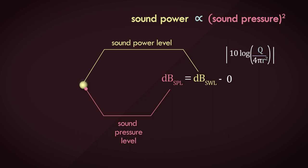This is a unique condition. The distance you need to be from the source to have the sound power level equal to the sound pressure level is 0.282 for a directivity of 1.